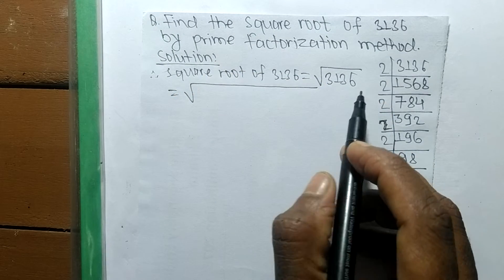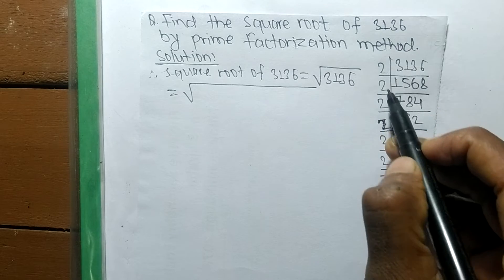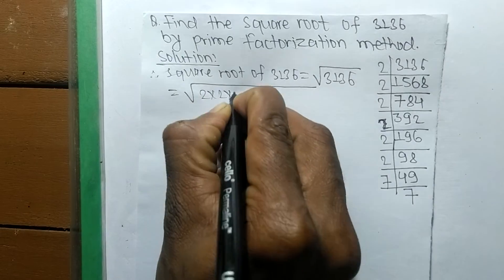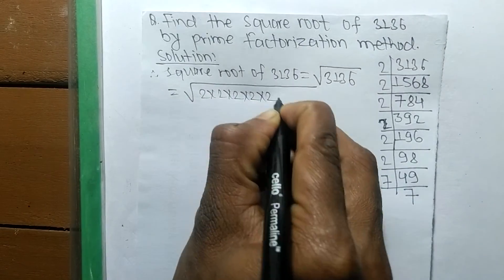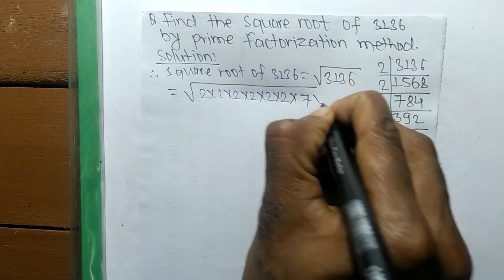Now we write down the prime factors of the given number. So it is 2, 2, 2, 2, 2, 2 times 7.